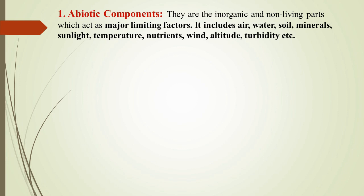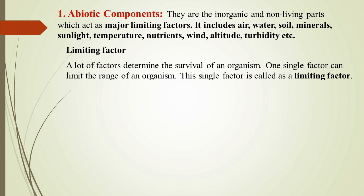Abiotic components are the inorganic, non-living components and are also sometimes called major limiting factors. If there is a question on limiting factors, we are talking about the abiotic component of ecosystem. It includes air, water, soil, minerals, sunlight, temperature, nutrients, wind, altitude, turbidity — all such non-living, inorganic parts. They are called limiting factors because many factors determine the survival of organisms; if these factors are limited, that will limit the success of survival of organisms. One single factor can limit the range of an organism — that's why it is called a limiting factor.